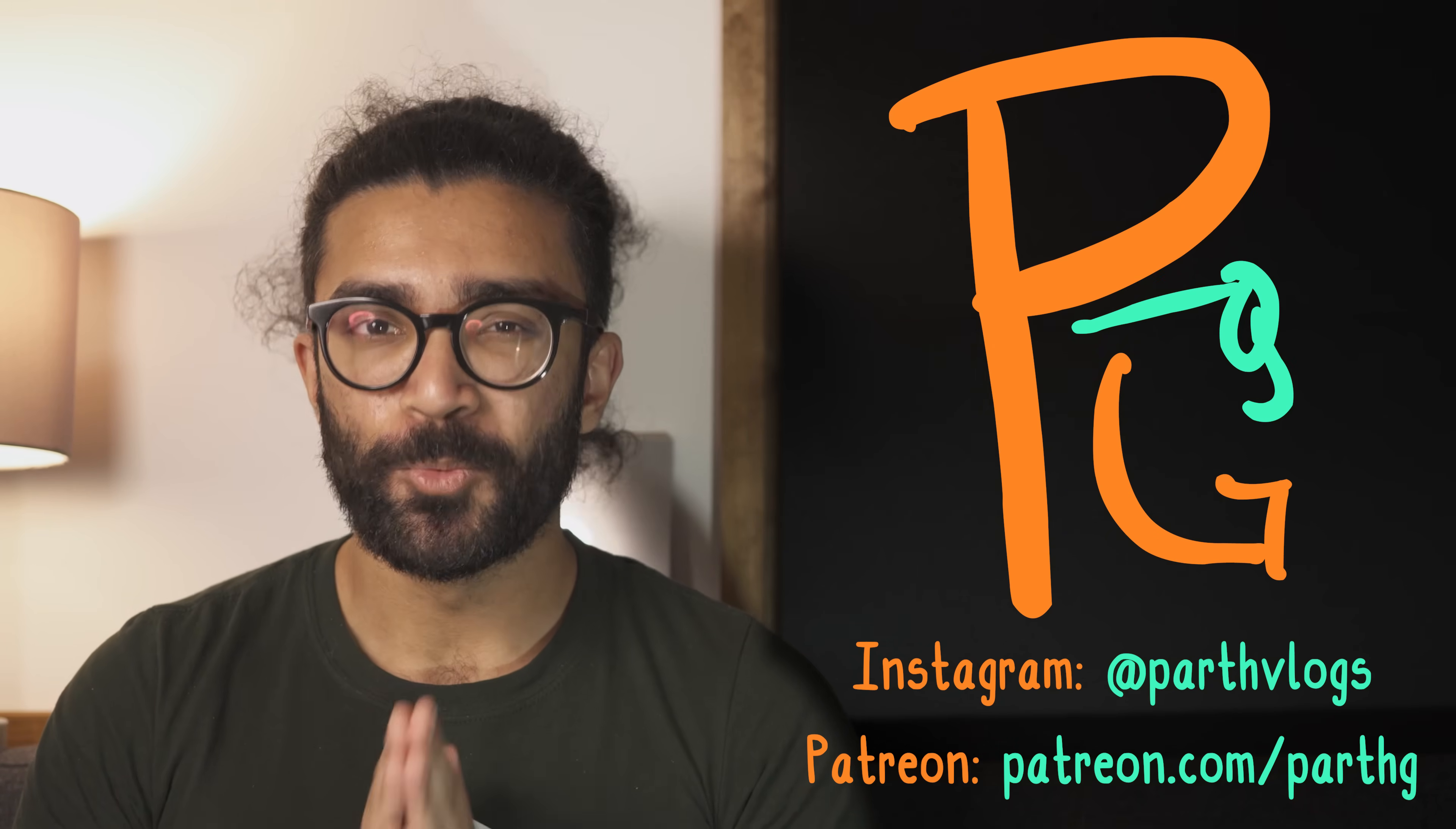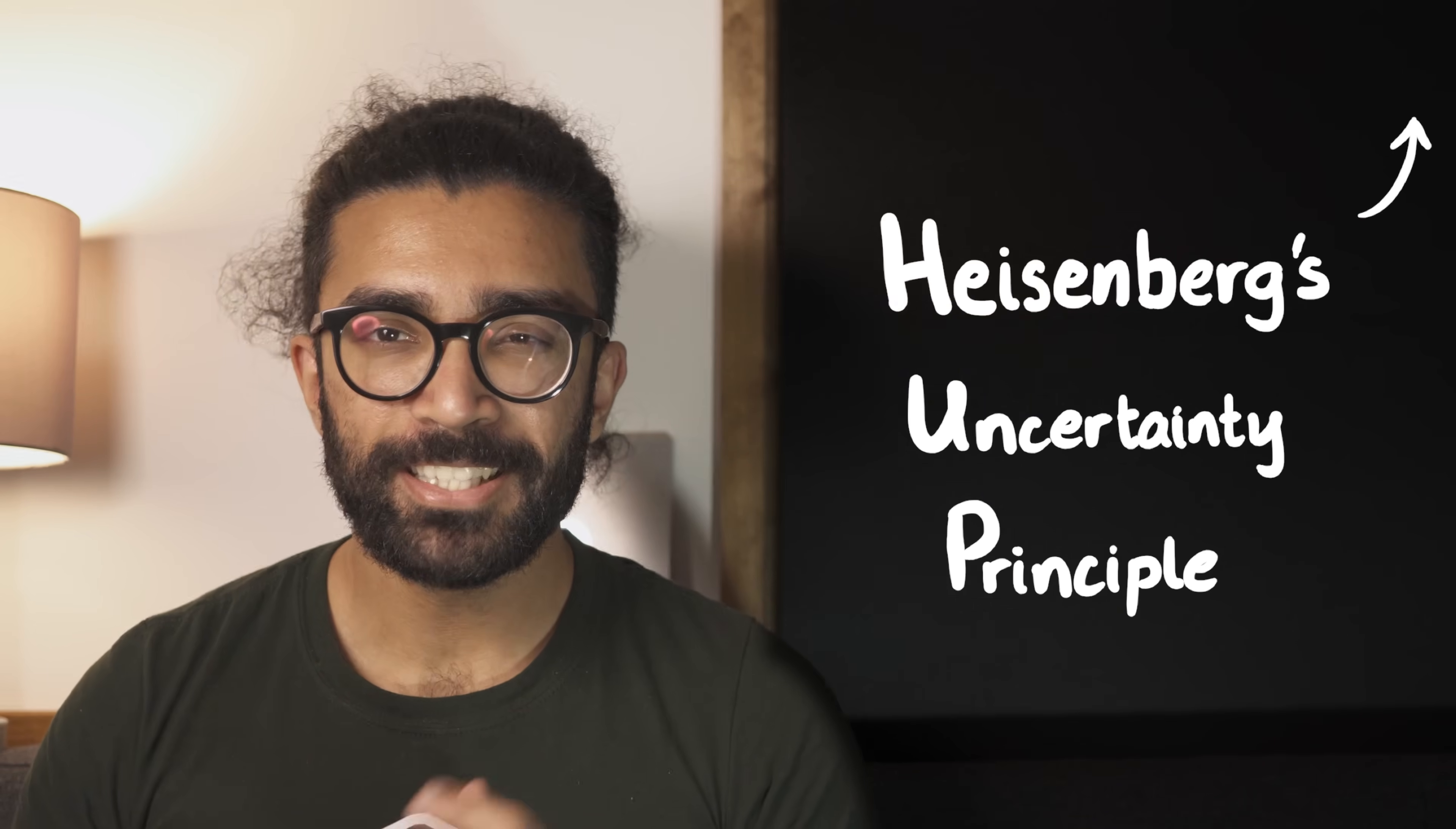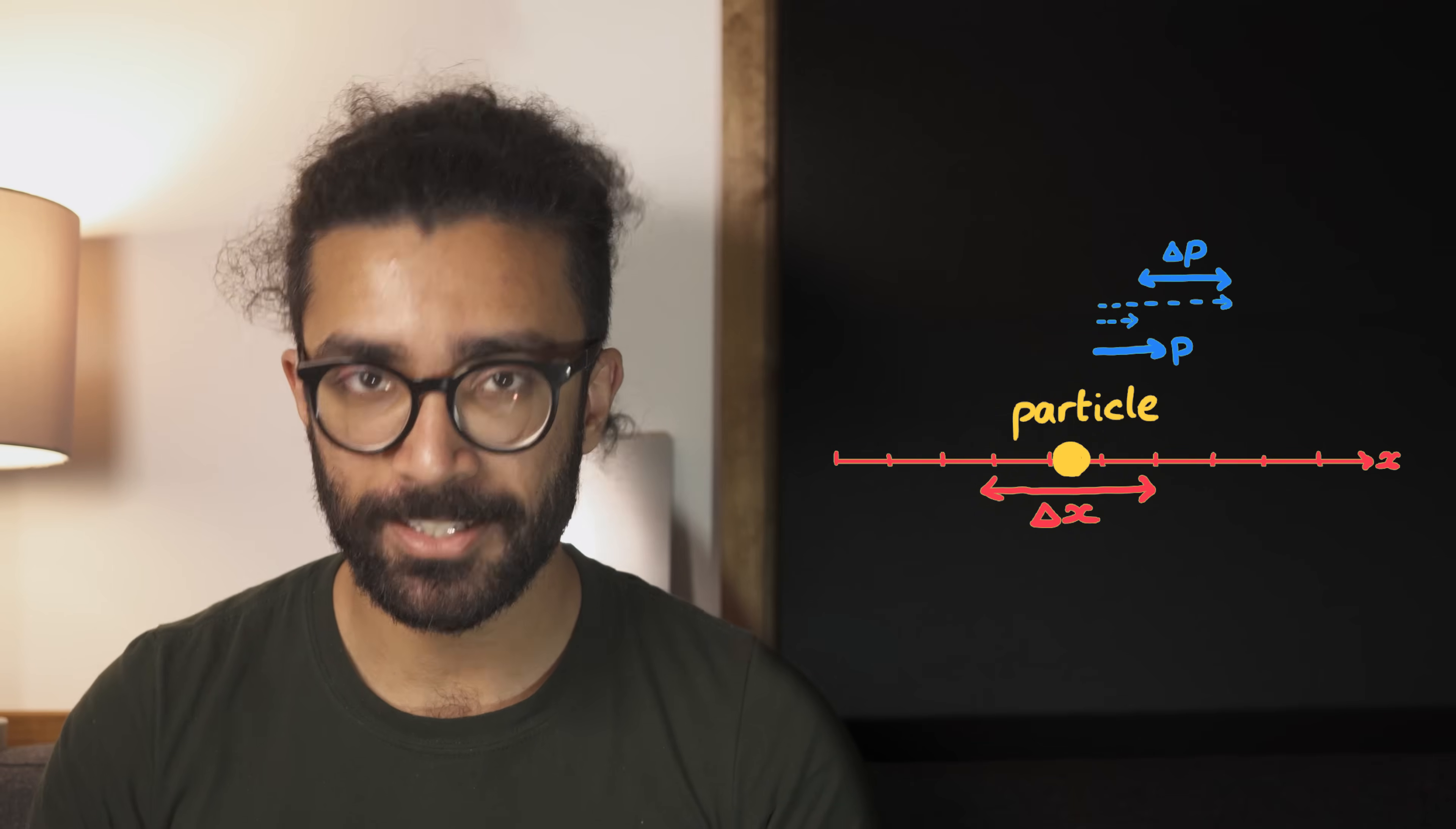The first thing we need to look at is what Heisenberg's Uncertainty Principle actually tells us. I've made a detailed video about this already—check it out up here if you haven't seen it. But basically, the gist is that when we use the theory of quantum mechanics to predict things like the position or the momentum of a particle, we cannot predict it with perfect precision like we can in classical physics.